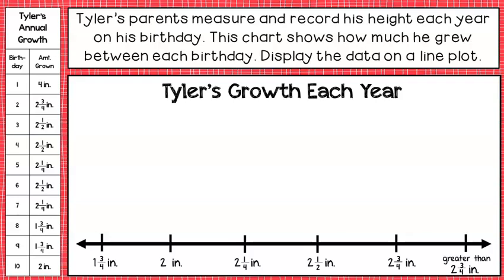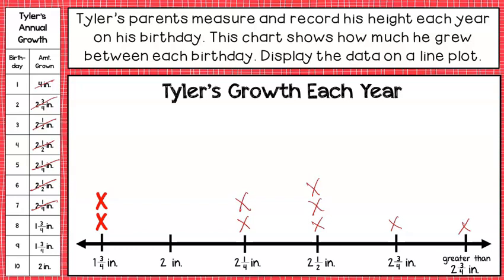First I put the title: 'Tyler's Growth Each Year.' Then I make my line with tick marks, starting at the lowest amount he grew — three-fourths — and including two and one-fourth, two and a half, two and three-fourths, and greater than two and three-fourths. Then I go through systematically: four inches goes in the 'greater than' category, then two and three-fourths, two and a half, and so on.